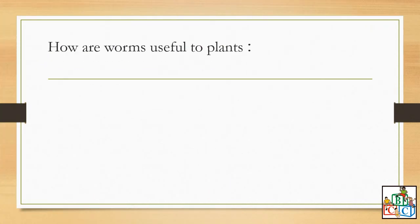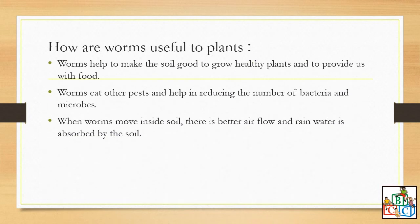How are worms useful to plants? So worms help to make the soil good to grow healthy plants and to provide us with food. Worms, they live inside the soil. So worms eat other pests as well and help to reduce the number of bacteria and microbes that the pests may bring to the plants. When worms move inside the soil, they are going to make holes in the soil. So when the holes are made in the soil, there is better air flow and the rain water is absorbed by the soil.